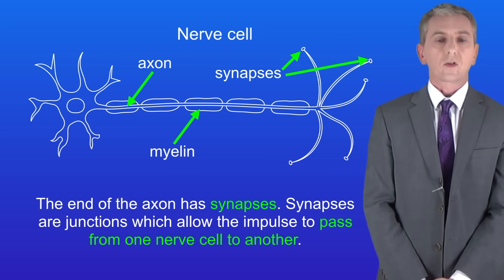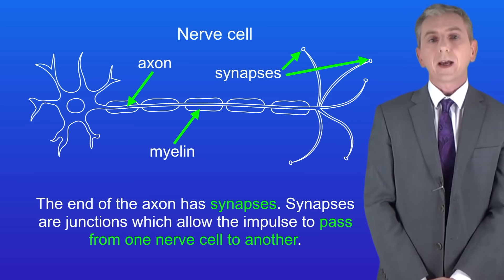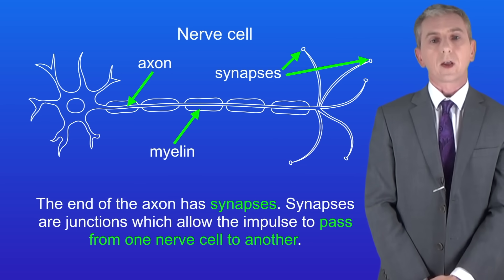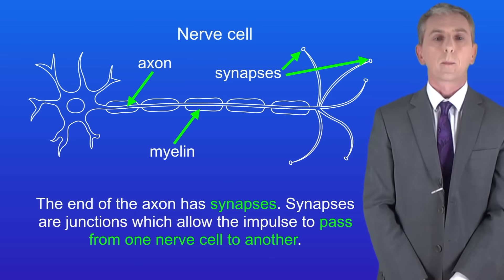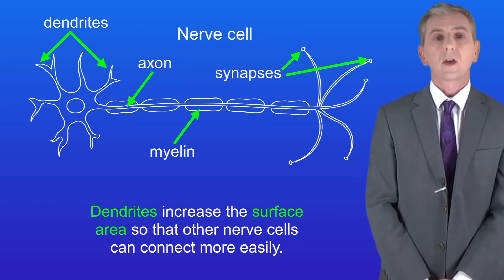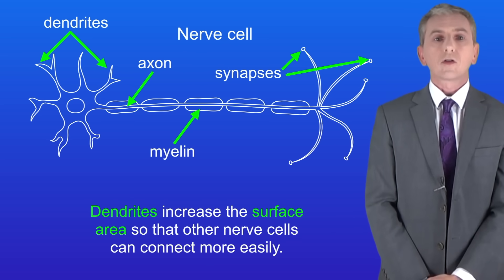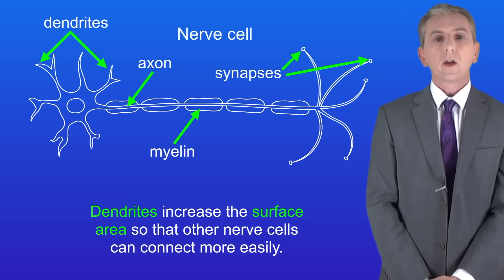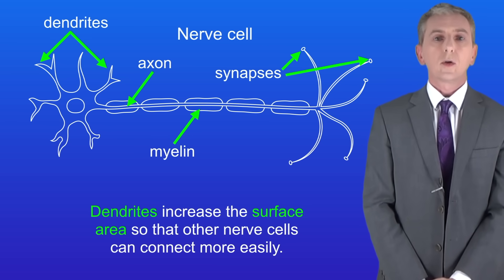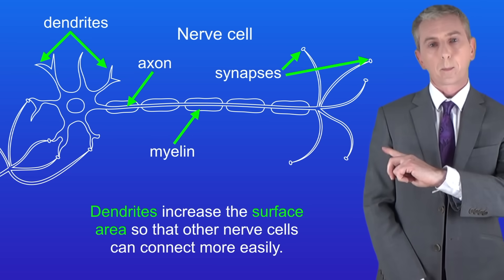The end of the axon has synapses. Synapses are junctions which allow the impulse to pass from one nerve cell to another. The cell body of the nerve cell has dendrites, which increase the surface area so other nerve cells can connect more easily. I'm showing you another nerve cell connecting here.